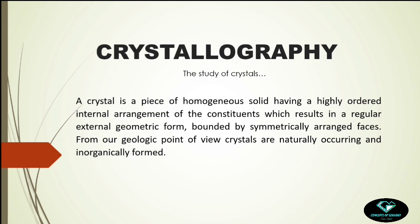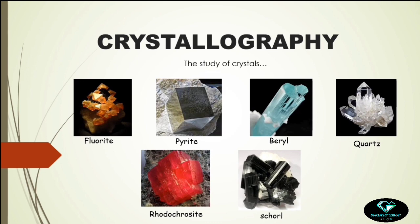From our geologic point of view, crystals are naturally occurring and inorganically formed. At the introductory class of economic geology, in the context of ore, we concluded the definition of mineral as a naturally occurring solid substance having definite chemical composition and ordered internal atomic arrangement. When we use particular elements — sodium, potassium, calcium, silicon, aluminium, etc. — to construct a particular mineral in an ordered atomic arrangement, the resulting mineral should have a particular external appearance.